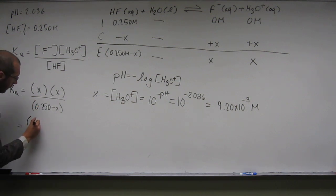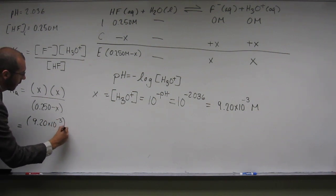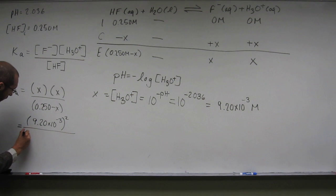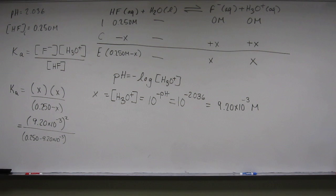So let's do that. So X times X is X squared. So I'm just going to write 9.20 times 10 to the negative 3 squared divided by 0.250 minus 9.20 times 10 to the negative 3.